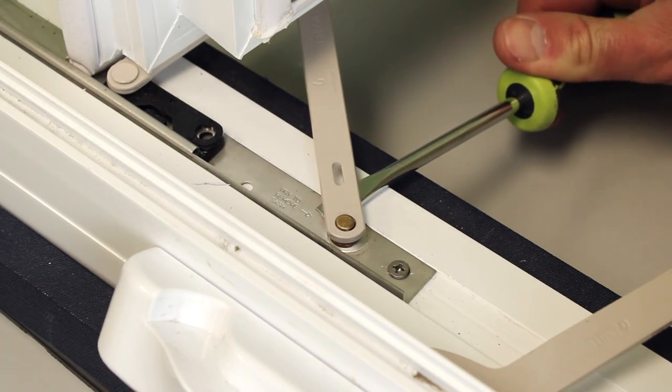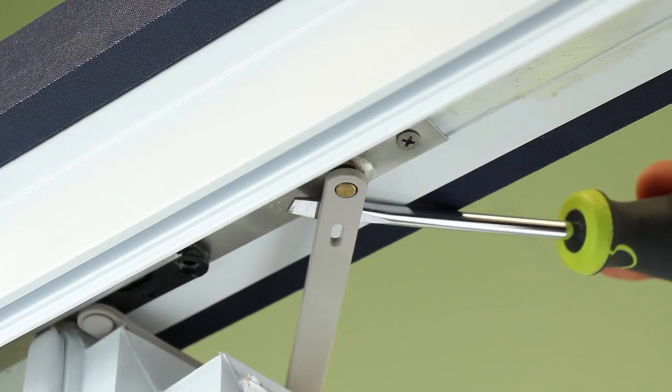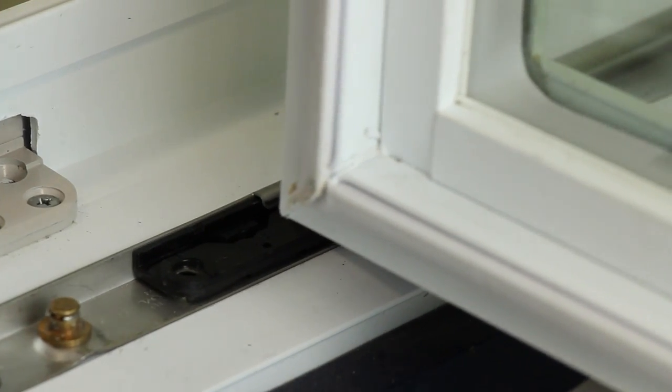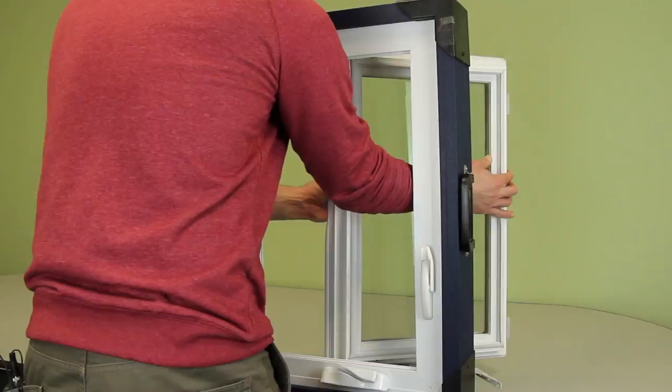Then, use a flat-head screwdriver to disconnect the window sash from the rest of the hinge set. Carefully slide your window sash off of the bracket and lift it out of the frame.